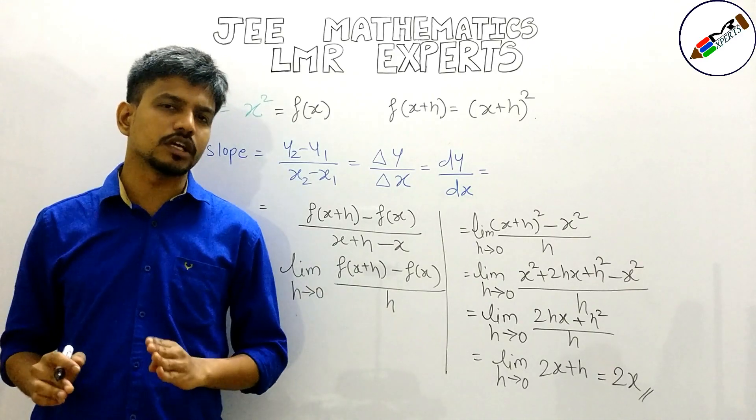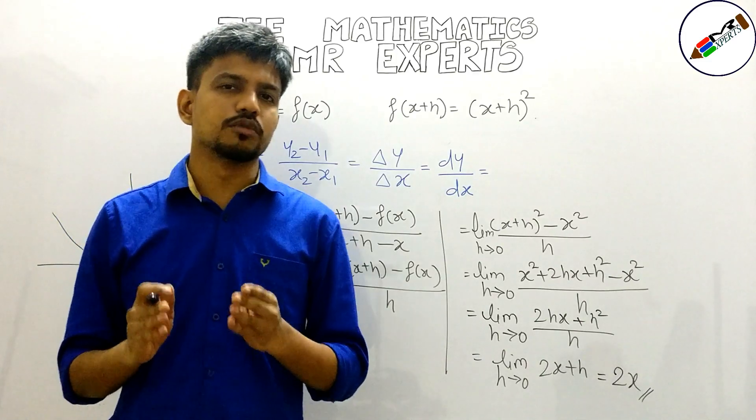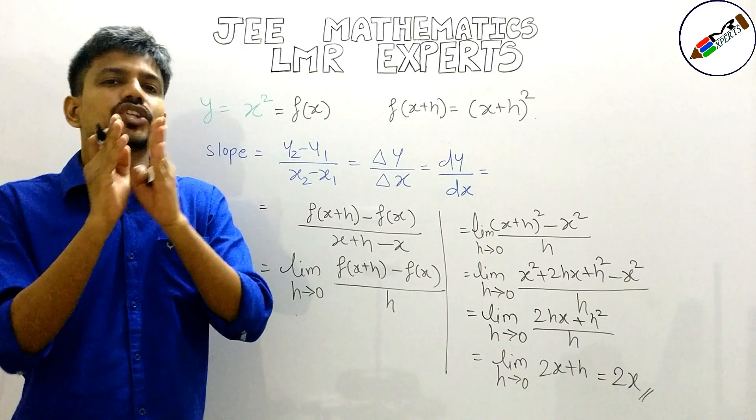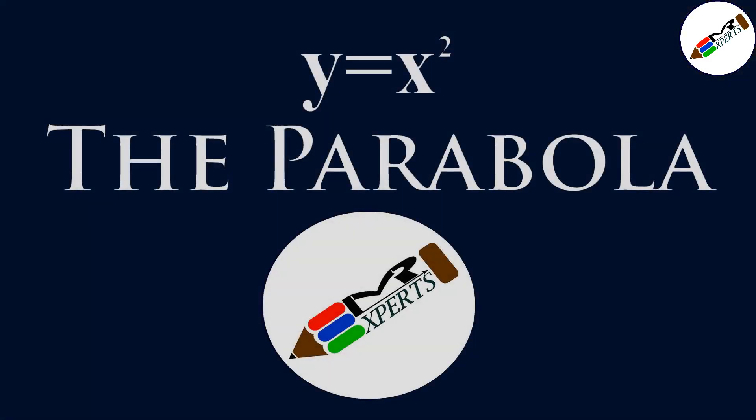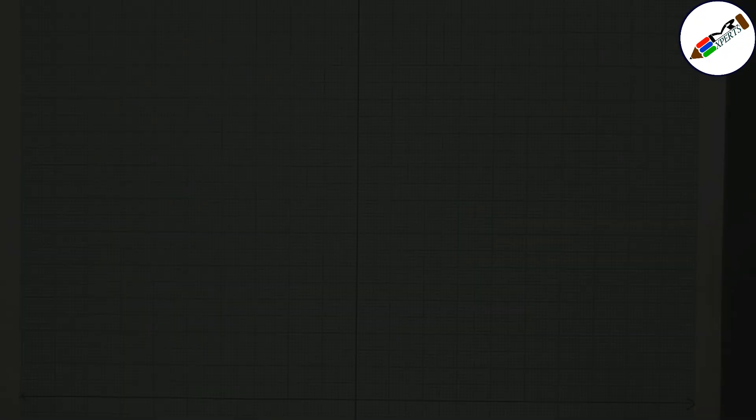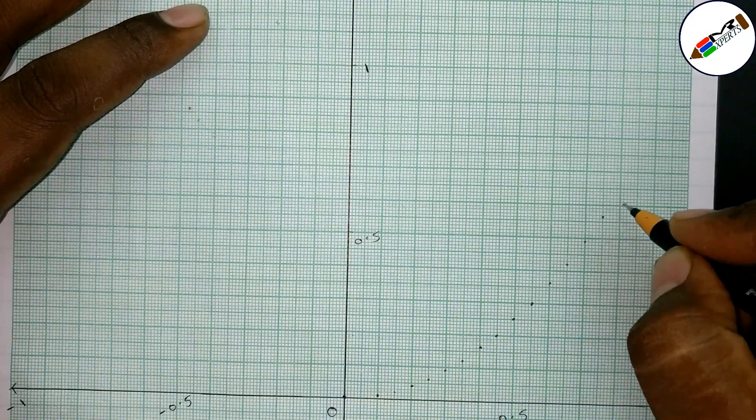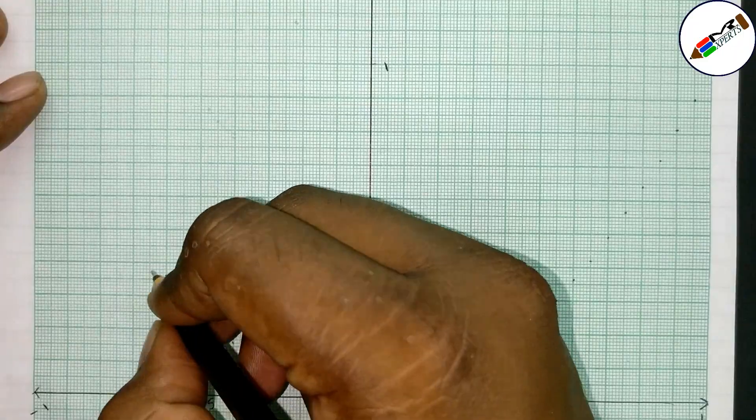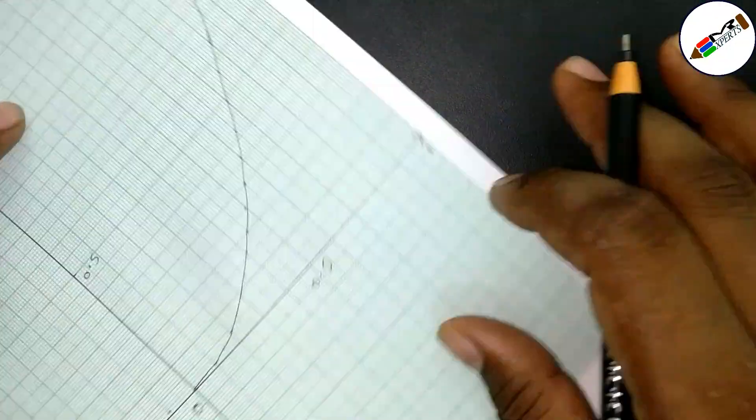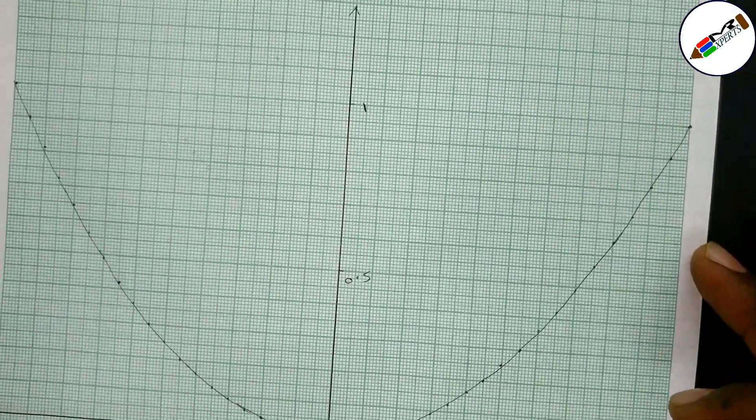Now you must all be wondering that how come slope is 2x. What you know about slope is it is the tangent of the angle means tan theta. Guys let us practically demonstrate derivatives using the graph. Here we are drawing a parabola but what is a parabola? A parabola is a function for which y is equal to x square. See we have almost drawn the parabola.